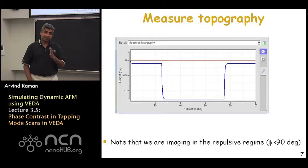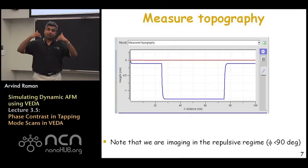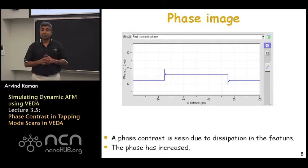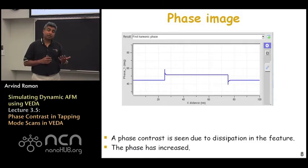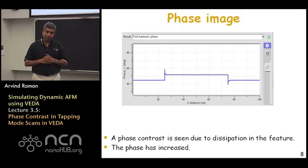With the imaging conditions shown in the appendix, when we plot the topography in blue, instead of being flat as expected, the soft feature appears depressed by about a nanometer and a half compared to the substrate. When we plot the phase, we find again that all of the phase is basically below ninety degrees, meaning both the substrate and the feature are in the repulsive regime of imaging. But we find that the phase lag is now greater on the feature compared to the substrate, which suggests more dissipation on the feature — confirming the theory that in the repulsive regime, greater phase lag corresponds to more energy dissipation.